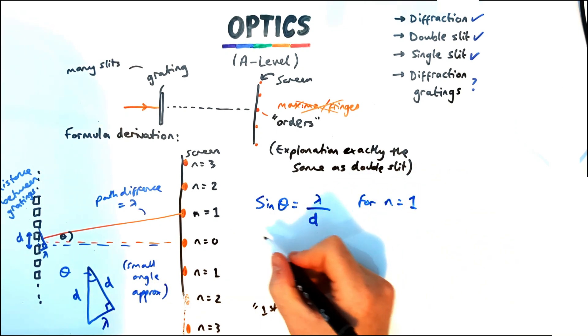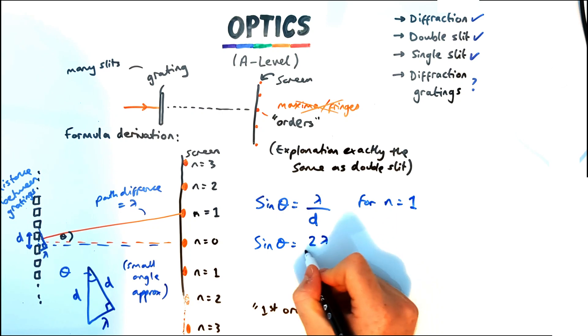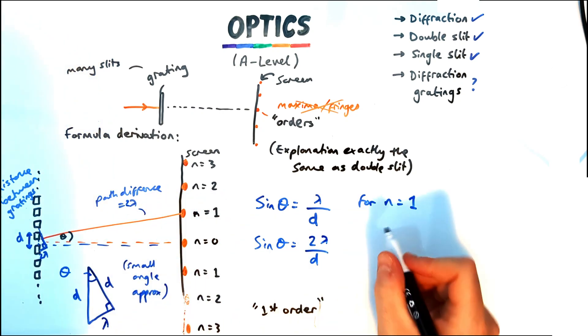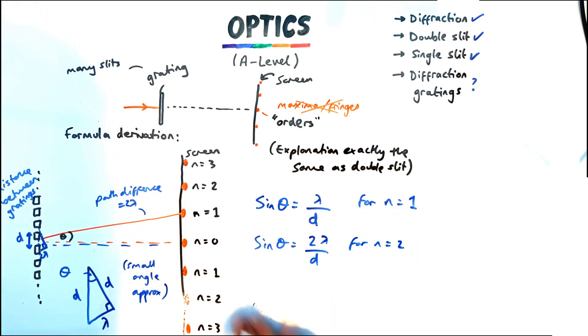Now if we're looking at instead of the first order we can look at the second order. Well this time it would mean it would be two wavelengths path difference and then third will be three wavelengths path difference etc. So we can modify this a little bit and say instead of sine theta equals wavelength over d we can say equals n wavelength over d where n is just number of orders which is our integer.